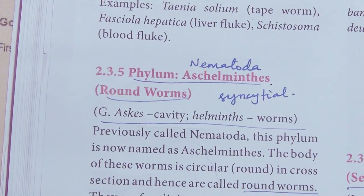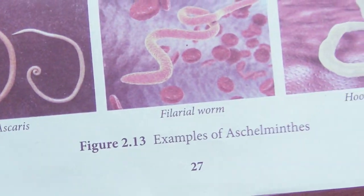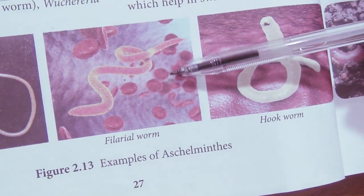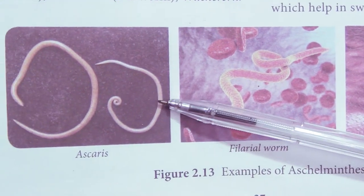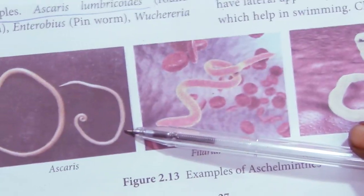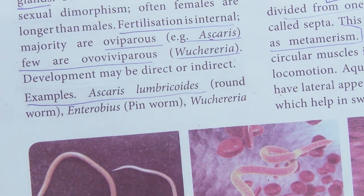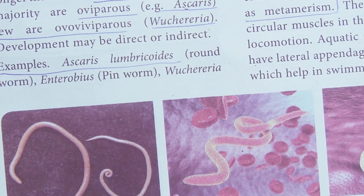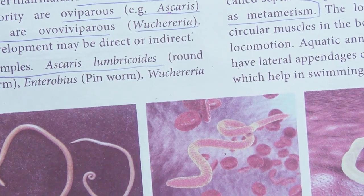This is about Platyhelminthes and Aschelminthes. Hope you enjoyed today's class and understood everything. You can see here the hookworm excreted through our excreta, and the filarial worm Wuchereria bancrofti which lives in the blood among RBCs. Hope you enjoyed this day's class. I wish you all the best — stay blessed. Stay at home and do your homework. Enjoy learning with your mother and father. Thank you so much. God bless you.